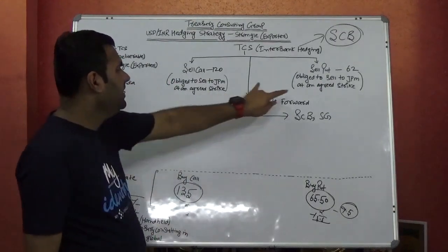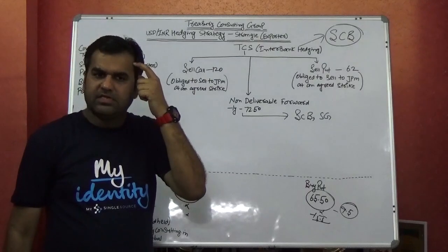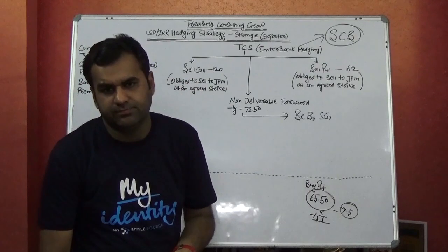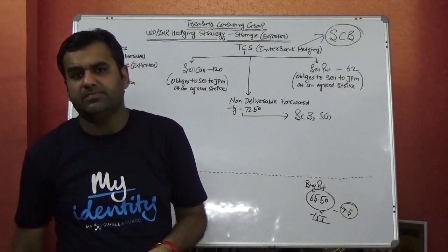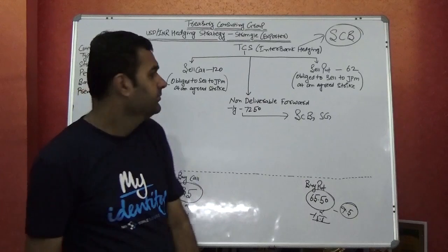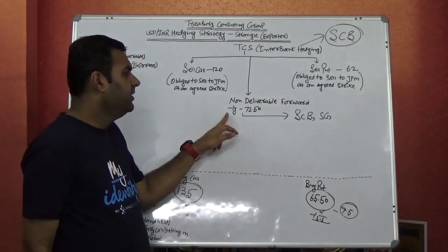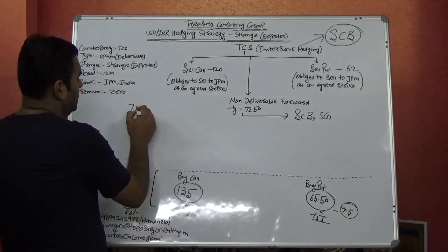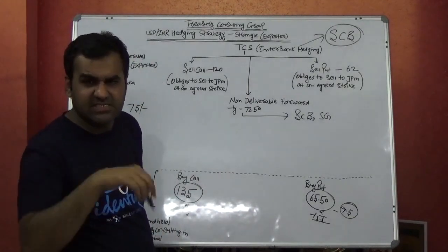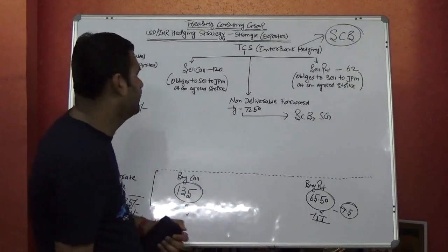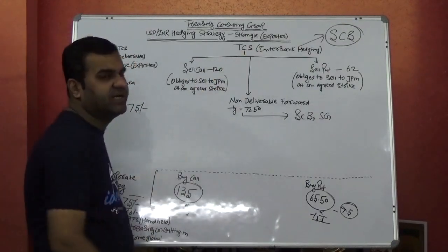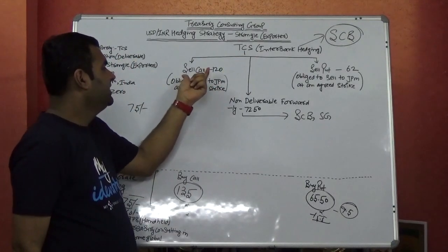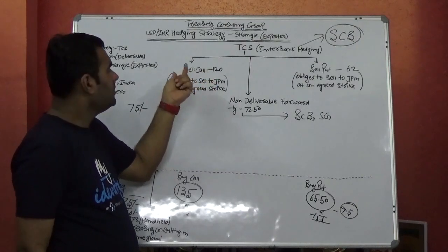And this non-deliverable you are taking from Singapore. Now let's take the same 75 Tokyo cut. Because if the Tokyo cut is 75 for TCS, it is same for Chase and Standard Chartered. Now here who has the right? Standard Chartered would stand.